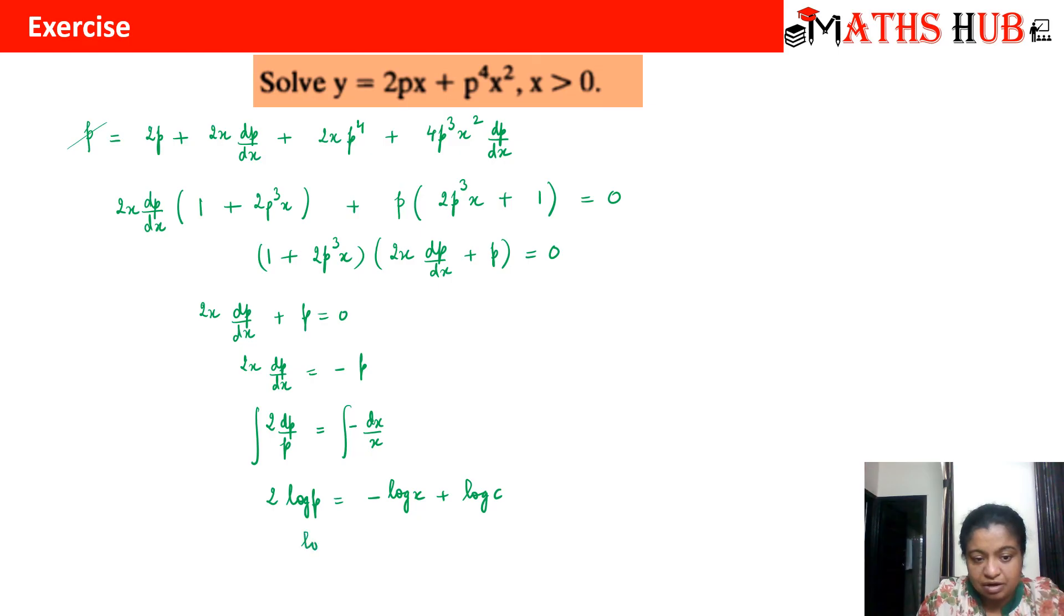This becomes log p square equals log c by x. From here when I remove the log I will get p square equals c by x, or p equals under root c by x. Now just substitute this value of p back in that equation.